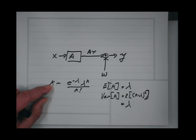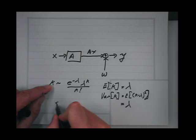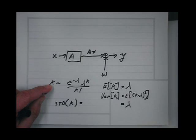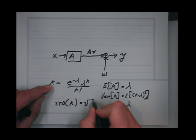The mean and the variance are both lambda. The standard deviation is the square root of lambda.